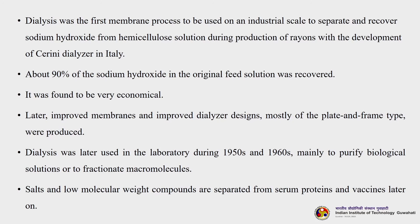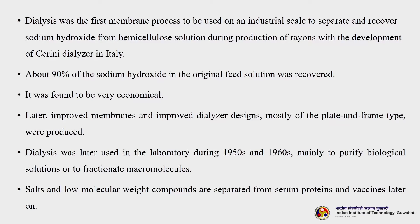Dialysis was the first membrane process used on an industrial scale to separate and recover sodium hydroxide from hemicellulose solution during the production of rayon, with the development of the Serene dialyser in Italy. The Serene dialyser is one of the most well-adapted dialysers in industry, mostly textile industries. During rayon production, hemicellulose gets mixed with sodium hydroxide at very high concentration. Using the Serene dialyser, about 90% of sodium hydroxide in the original feed solution was recovered, making the process extremely economical. It was later modified and adapted for various industrial purposes.